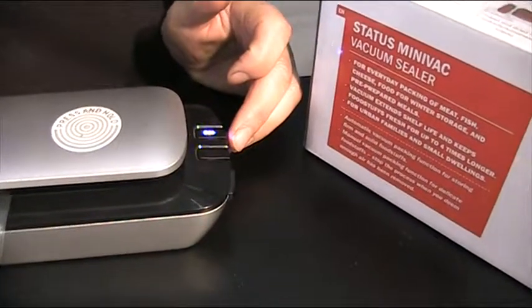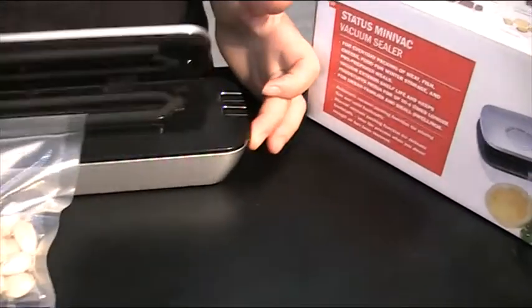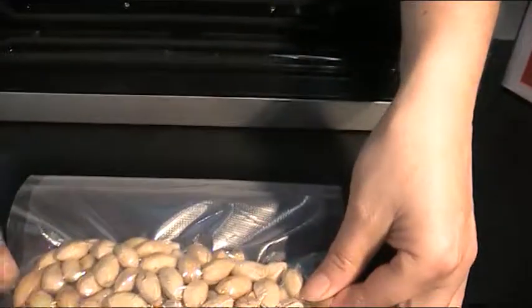When both the lights have gone out, press the release lever at the front to open up the machine and there you are, vacuumed and sealed.